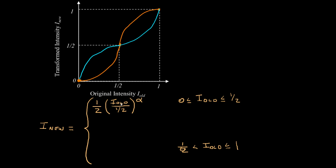Now, let's see what happens. When I_old is 0, raise it to any power, it'll remain 0. So we'll be at this point. When the input, the original intensity, is 1/2, we'll have 1, 1 raised to any power is 1, and so we'll have a value of 1/2.